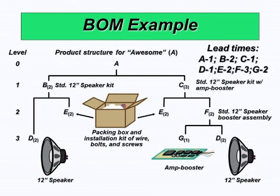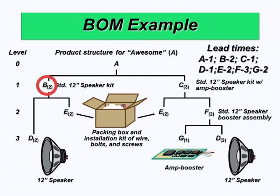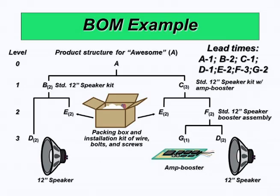Let's start with this example of a bill of materials. It is one of the most simple products you can really think of. This is the product structure or the bill of materials of a speaker set. The speaker set here is denoted by the letter A, which is made up of two major sub-assemblies B and C. B is the speaker kit and C is the speaker kit with amp booster. For every item A, the final product, you need two B's and three C's.